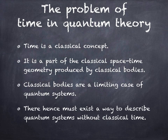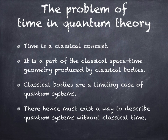What is the problem of time in quantum theory? Time is a classical concept — part of a classical space-time geometry produced by classical bodies. These classical bodies are in turn a limiting case of quantum systems. There must therefore exist a way to describe quantum systems without classical time, because we do not want quantum theory to depend on its own limit. Classical bodies, being a limiting case of quantum theory, give rise to classical space-time, which is again used to describe quantum systems. That is a circular dependence we would like to eliminate, and hence find a way of describing quantum theory without using classical time.